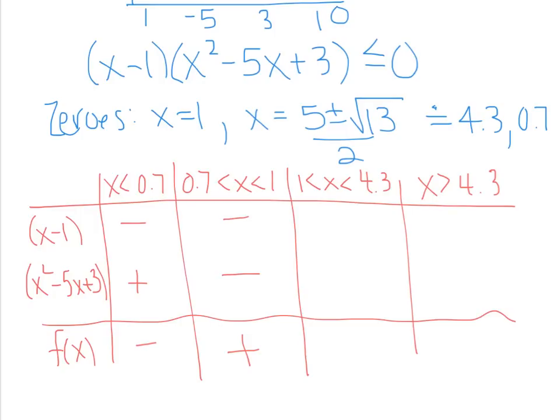Over here, we're going to punch in a number like two. It's probably pretty easy to do in our heads. Here we know we'll get positive. When we punch two into this, we're going to get four. Minus ten is negative six plus three, so it's going to be negative. Overall negative. And then for the last column, we can do something like five. We know we're going to get positive. Over here, we're going to get 25 minus 25 plus three, so that's going to be positive as well. And overall positive.